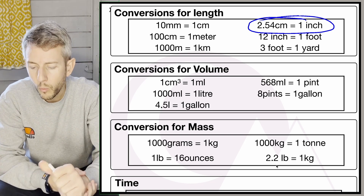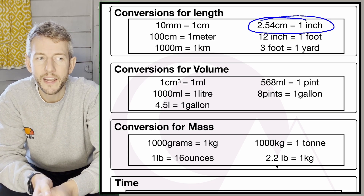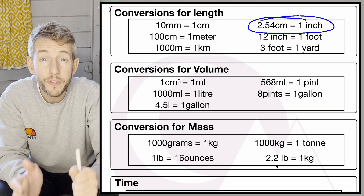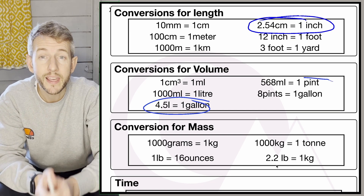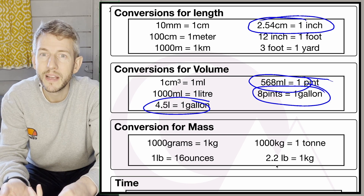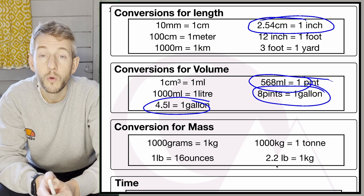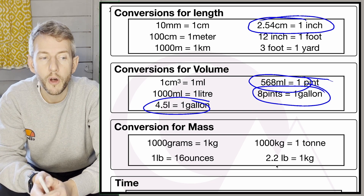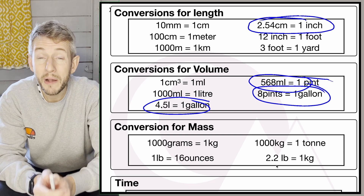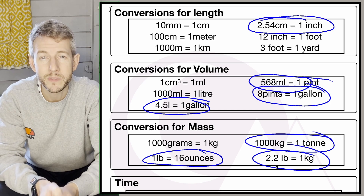For volume conversions: one centimetre cubed is one millilitre, 1,000 millilitres is one litre, 4.5 litres is one gallon, 568 millilitres is one pint, and eight pints is one gallon. You must know that one centimetre cubed is one millilitre and 1,000 millilitres is one litre. For mass: 1,000 grams equals one kilogram, one pound is 16 ounces, 1,000 kilograms is one tonne, and 2.2 pounds is one kilogram. You are expected to know that 1,000 grams is one kilogram.